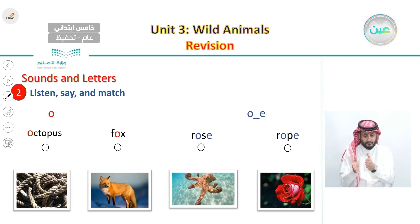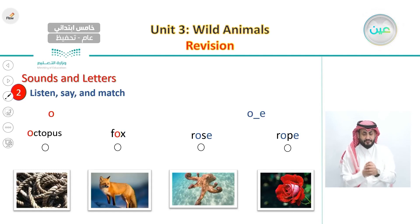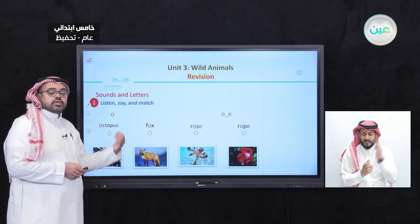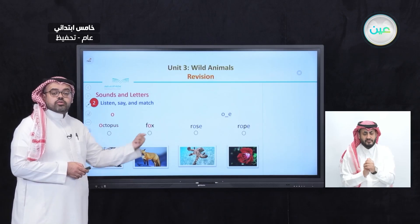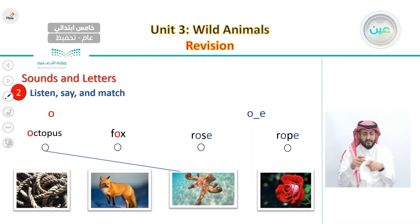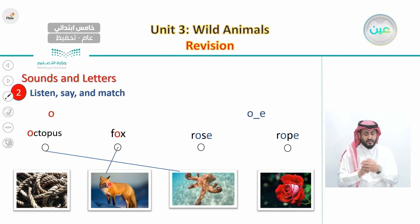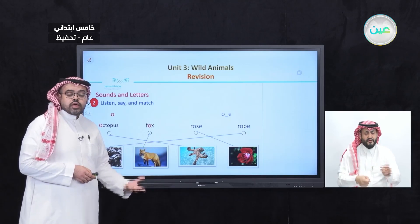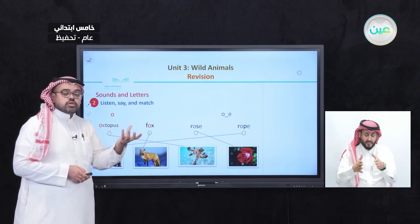After this, we did a listen-and-match exercise with sounds and letters. We had words with a single O sound and words with O-E at the end. After listening, we matched each word with the appropriate picture — for example: octopus, fox, rose, and rope. We repeated each sound to practice pronunciation.